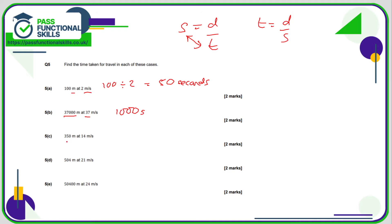For C, it's distance divided by speed: 350 divided by 14 is 25 seconds. 504 divided by 21 is 24 seconds. And for E, 50,400 divided by 24 is 2,100 seconds. Once you've done the first one, you can do them all as it's the same method.